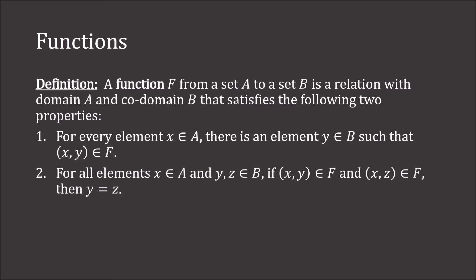Second, for all elements x in A and y, z in B, if (x, y) is in F and (x, z) is in F, then y equals z. That is, every element in the domain gets mapped to a unique element in the codomain.